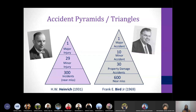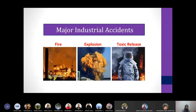Heinrich said that the number of incidents is related to the number of minor injuries, which in turn is related to the number of major injuries. Then Frank E. Burke Jr. in 1969, about 30 years later, made his own investigation and came out with his own triangle-shaped theory as well.